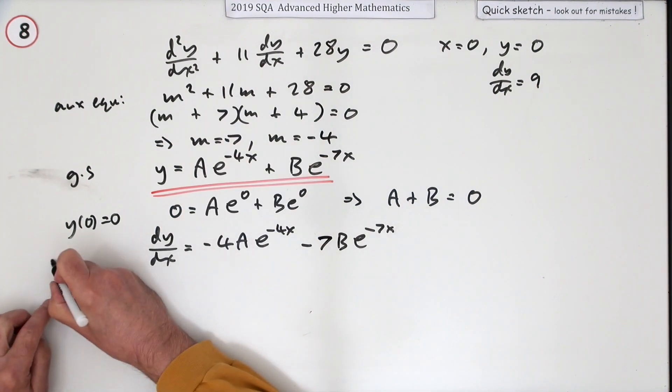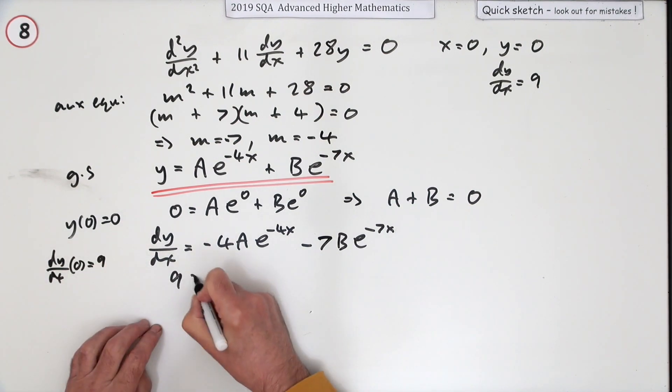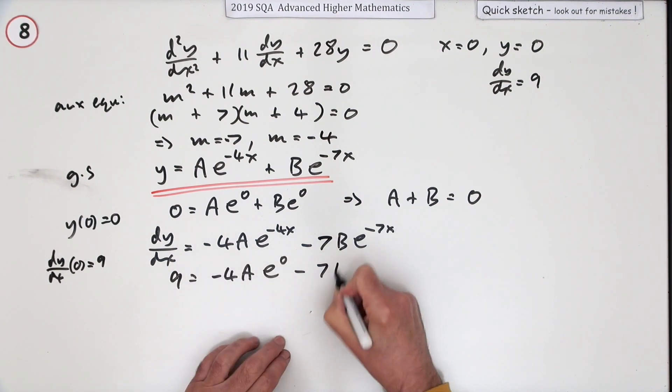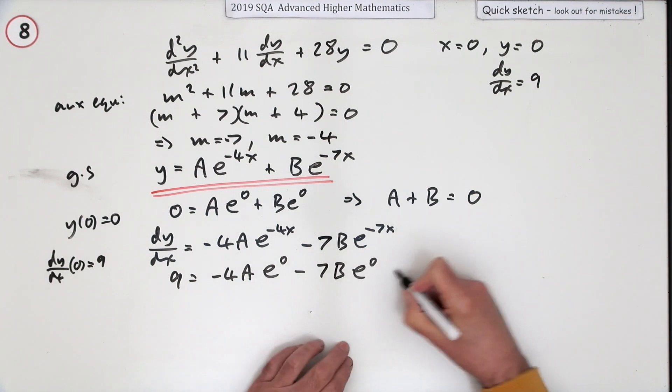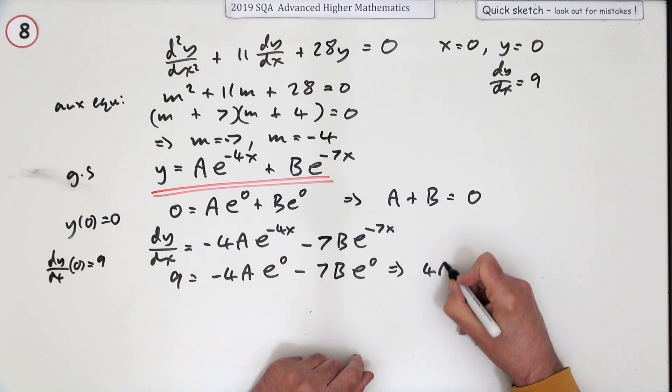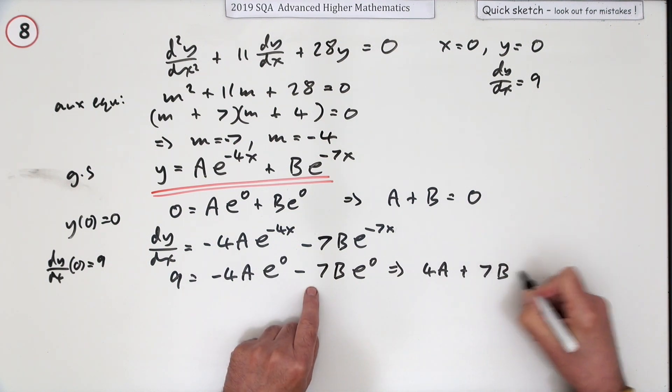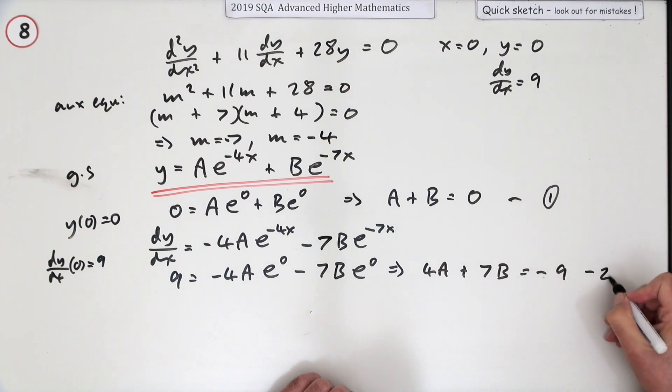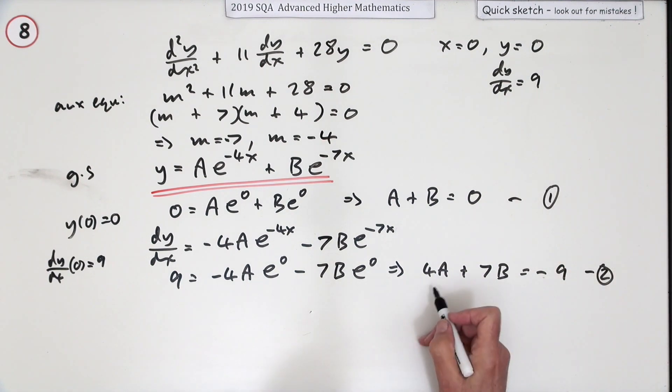So this time it says dy/dx evaluated at zero is nine. 9 = -4Ae^0 - 7Be^0. So here's another equation, I'll write it the other way around: 4A + 7B = -9.